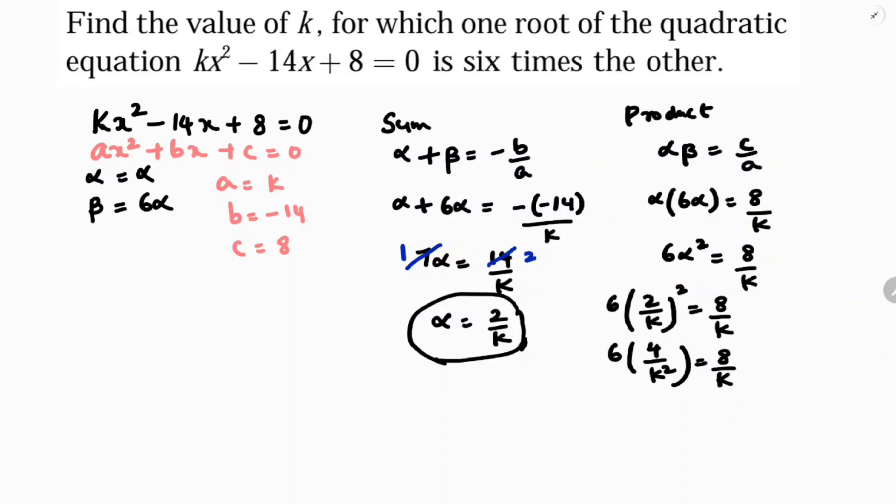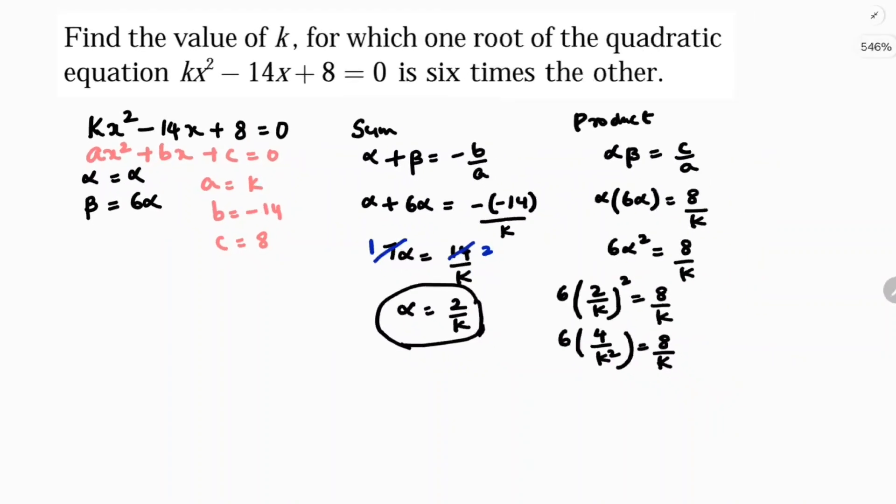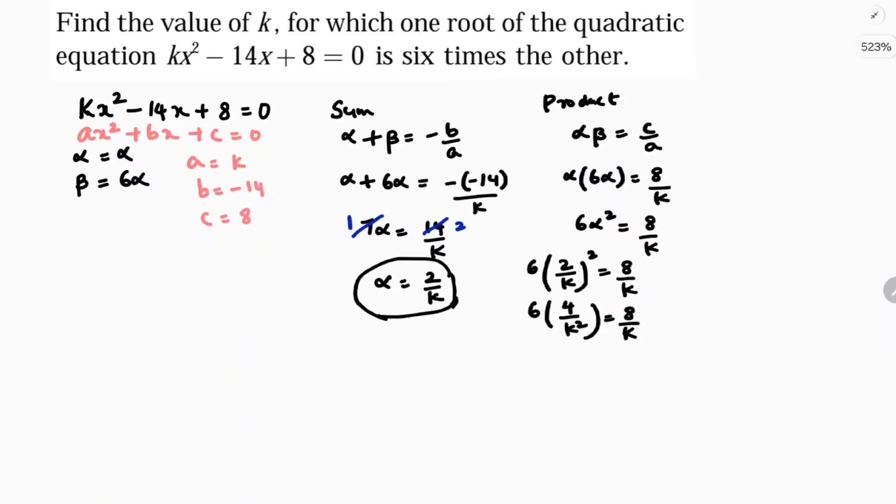6 times 4 is 24, so the next step: 24/k² = 8/k.